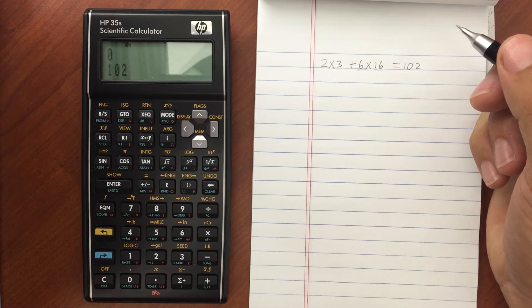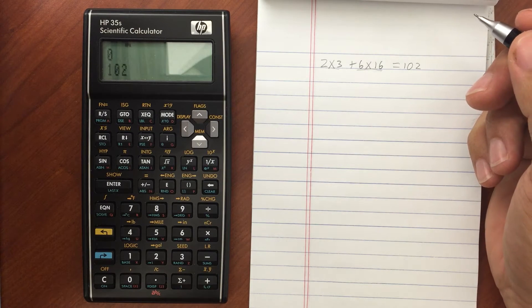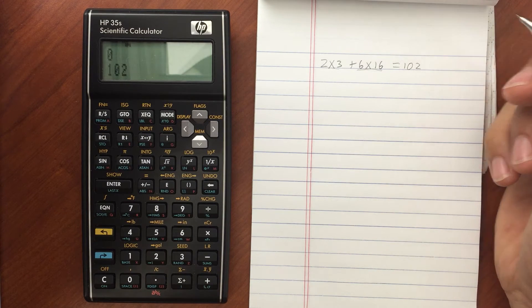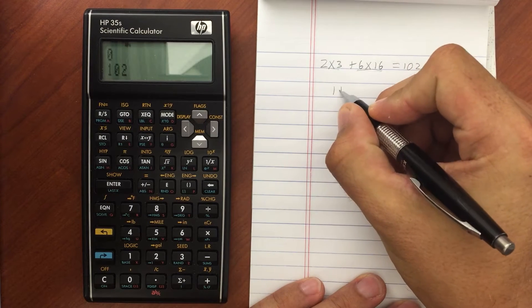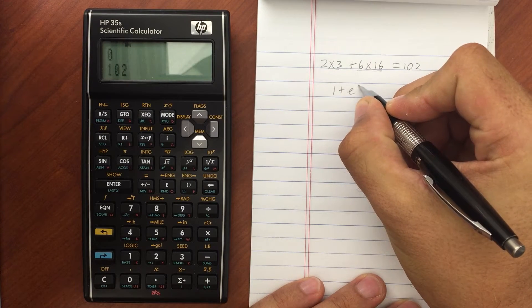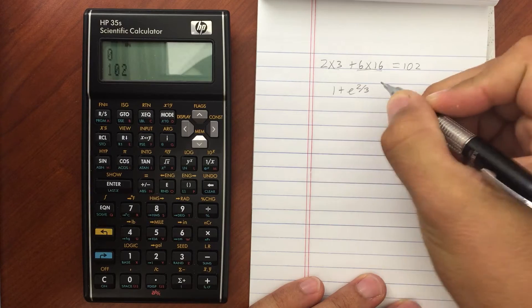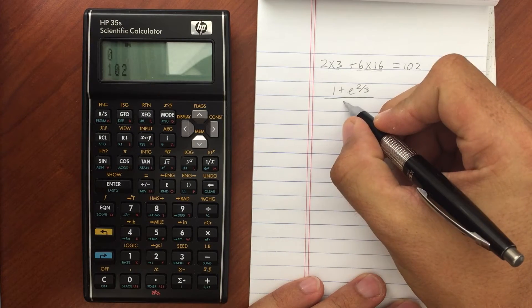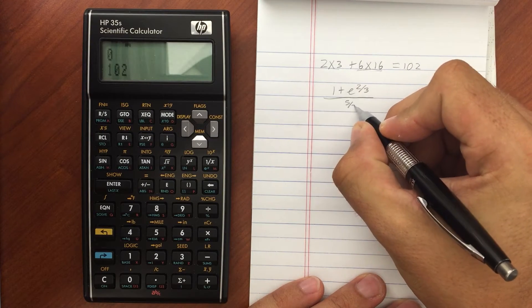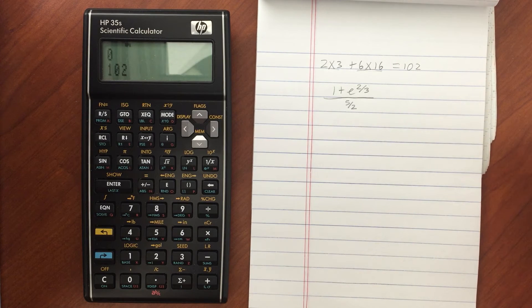The benefit of this isn't immediately obvious, but it comes when you have longer equations. Say we have something like 1 plus e to the 2 divided by 3 all over 5 halves. Something like that.